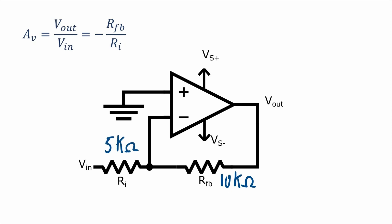Very simple to figure out what the voltage gain is. We take that feedback resistor of 10k divided by the input resistor of 5k and we get a gain of negative 2.